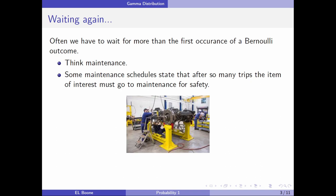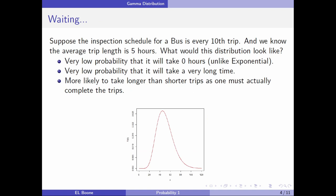We're going to be waiting again. In the last video we looked at the exponential distribution, waiting for the first occurrence of a Bernoulli outcome. What if we wanted more than just a single outcome? For example, bus maintenance or other maintenance schedules. You often have to go in for service after so many specific trips. It's not a matter of time because if it was time you could be in the middle of a trip, so they make it after so many trips.